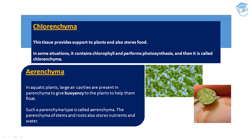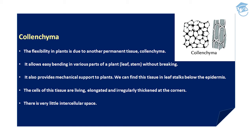Another permanent tissue is colenchyma. The flexibility in a plant is due to colenchyma — it allows easy bending in various parts such as leaf and stem without breaking, and also provides mechanical support to the plant. This tissue is found in the leaf stalk below the epidermis. The cells of this tissue are living, elongated, and irregularly thickened at the corners. There is very little or no intercellular space present between the cells of colenchyma.